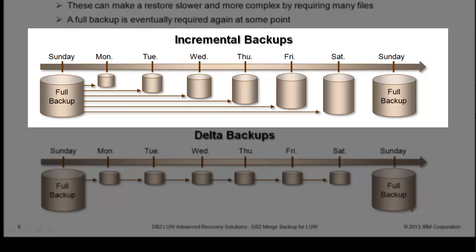The first shows a full backup being done on Sunday and then an incremental being done on Monday, which represents all the changes made since the full backup. When an incremental is done again on Tuesday, that represents all the changes made on Tuesday and Monday together since the full backup was done on Sunday. Incrementals mean a backup done for all pages that have changed since the last full backup.